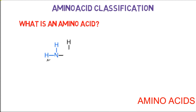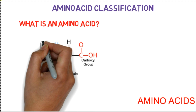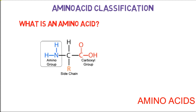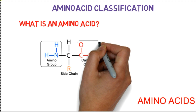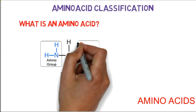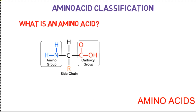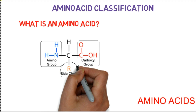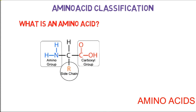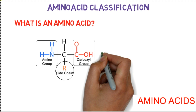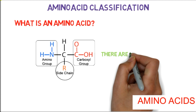An amino acid contains four different groups attached to the carbon: the N-terminal, which is the amino group; the C-terminal, which is the carboxyl group; the R chain; and hydrogen. Based on their R chain, 20 different types of amino acids are classified.